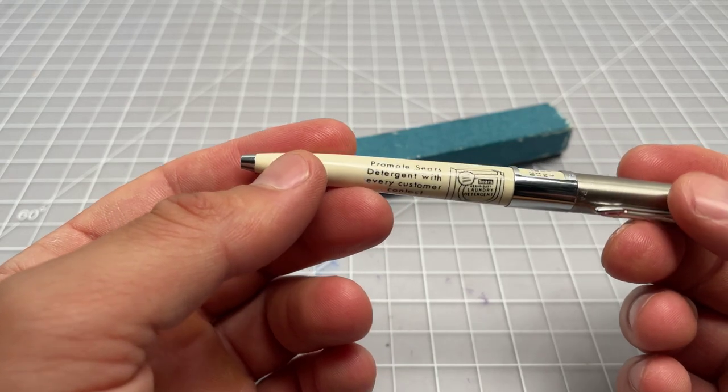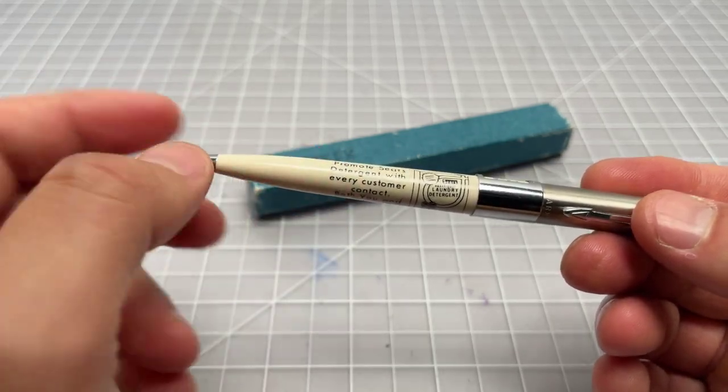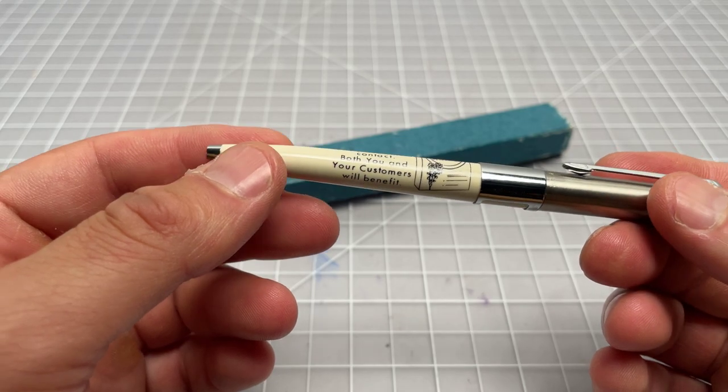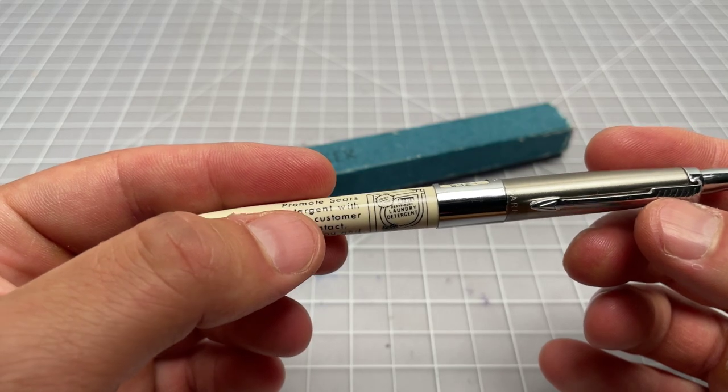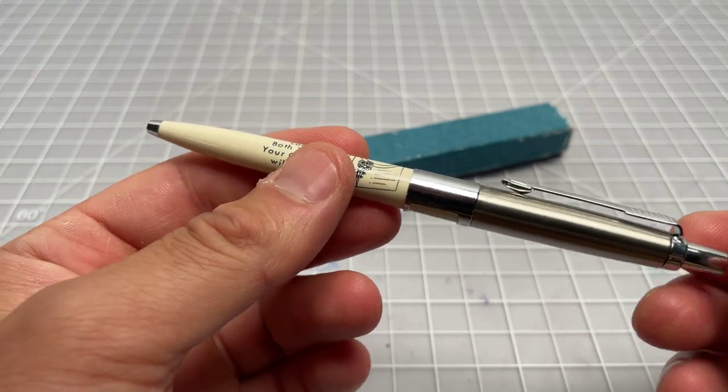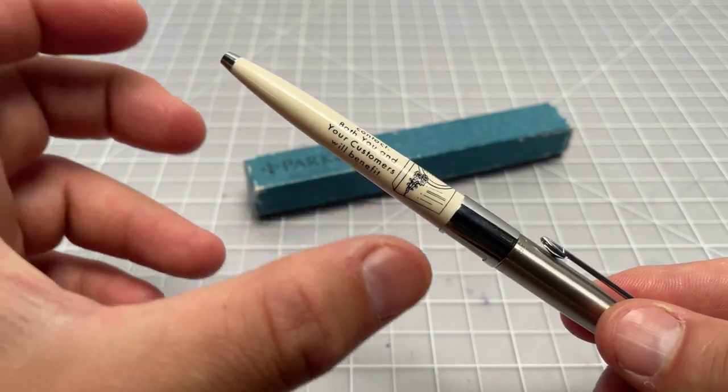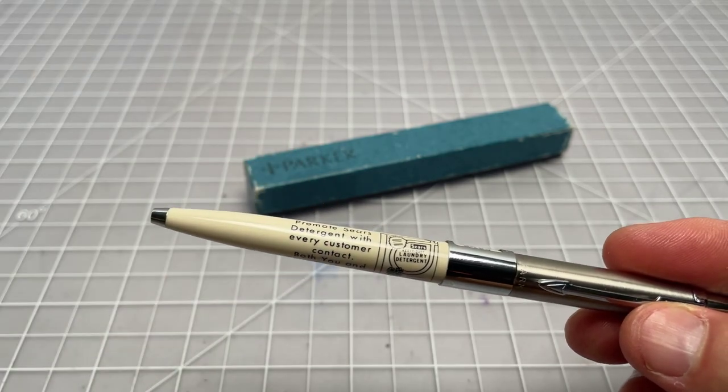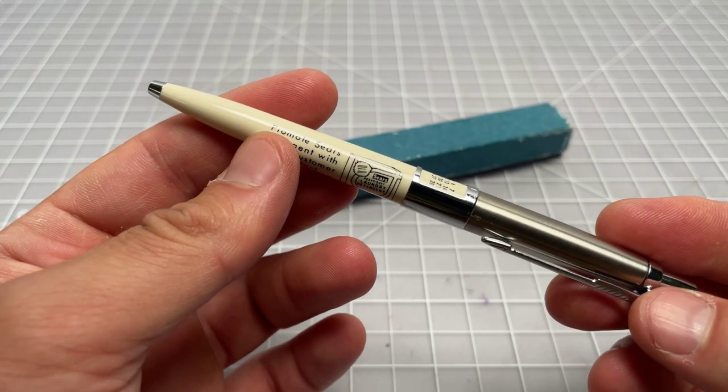This particular jotter would have been considered an advertising pen because it has the ad here. It says promote Sears detergent with every customer contact. Both you and your customers will benefit, and then there's a little logo of a Sears laundry detergent, heavy-duty laundry detergent. So this was probably a pen that was given out to a salesman. I guess it's technically called an advertising pen because it's promoting a message, but it would have been telling the salesman or reinforcing that the salesman do this promotional idea.